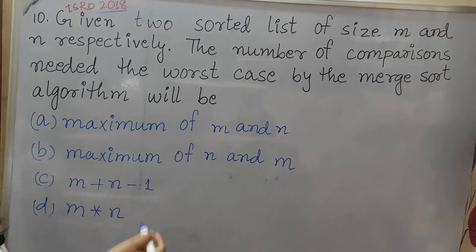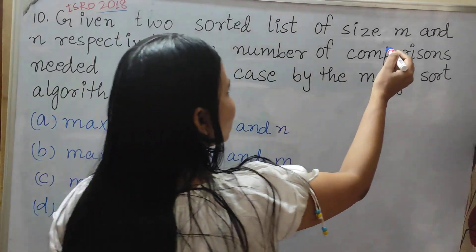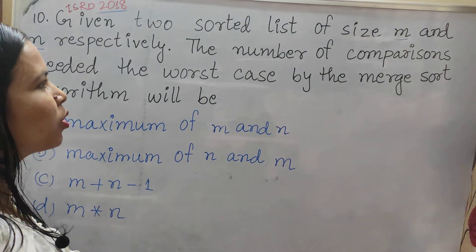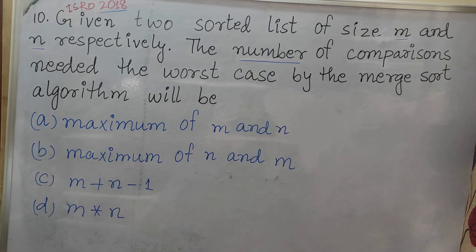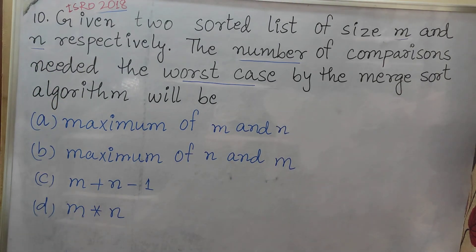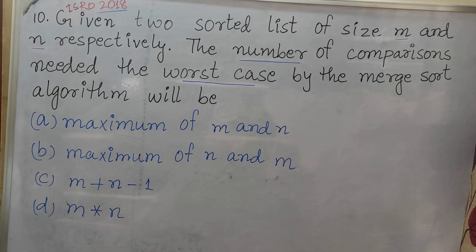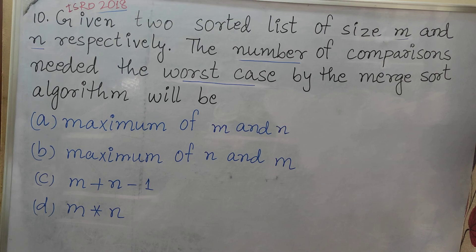I am reading the question for you. Given two sorted lists of size M and N respectively, what is the number of comparisons needed in the worst case by the merge sort algorithm? Option A: maximum of M and N. Option B: maximum of M and N. Option C: M plus N minus 1. Option D: M into N.